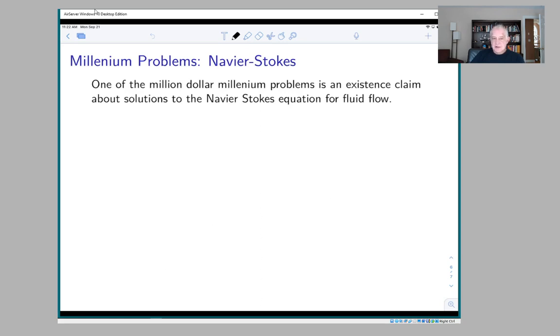One of the millennium problems is called the Navier-Stokes problem, and the thing that's worth a million dollars is to show that there exist solutions to this Navier-Stokes equation.